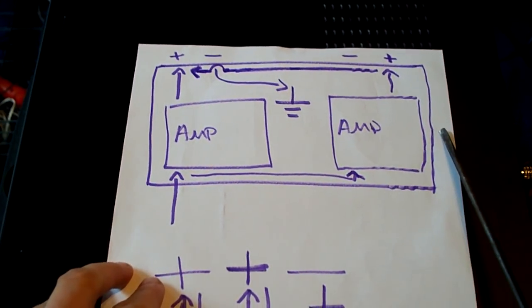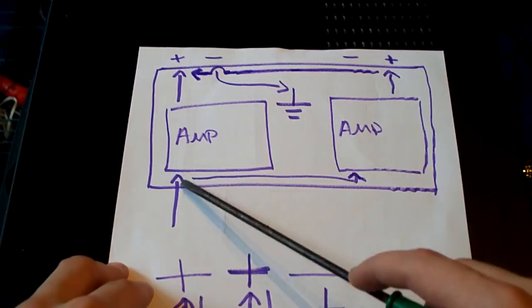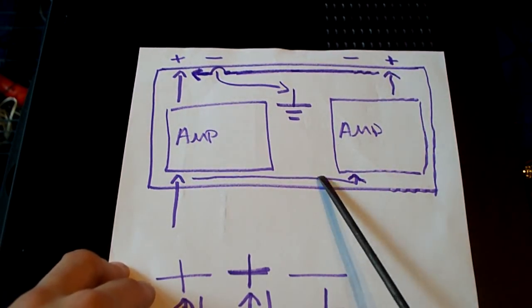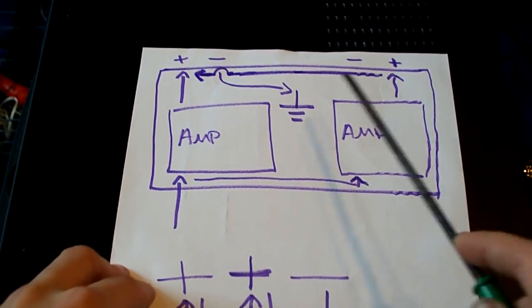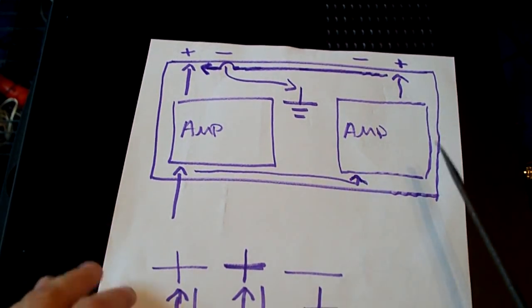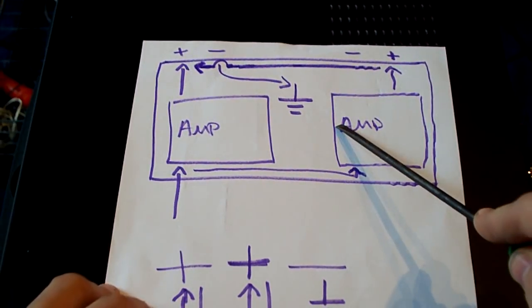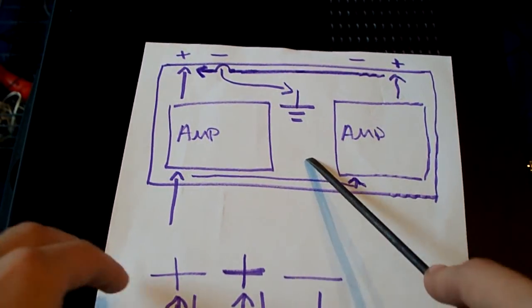So, for example, my crown amplifiers are 2-ohm stable on each side. And when you parallel mono them, then I can run 1 ohm, which means I get double the power. So I get the same RMS power from parallel mono as bridge mono. I should get slightly more from parallel mono.